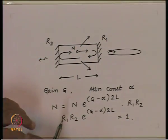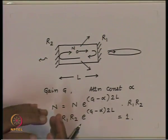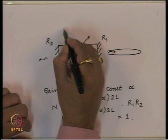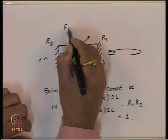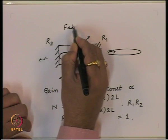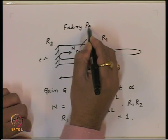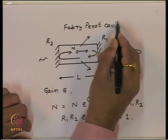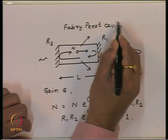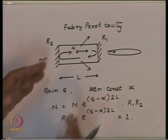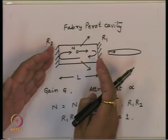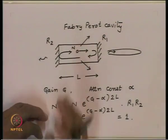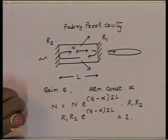This resonant cavity structure is called the Fabry-Perot cavity. So we have a cavity where photons are confined by putting mirrors on two sides of this medium — what is called the Fabry-Perot cavity.